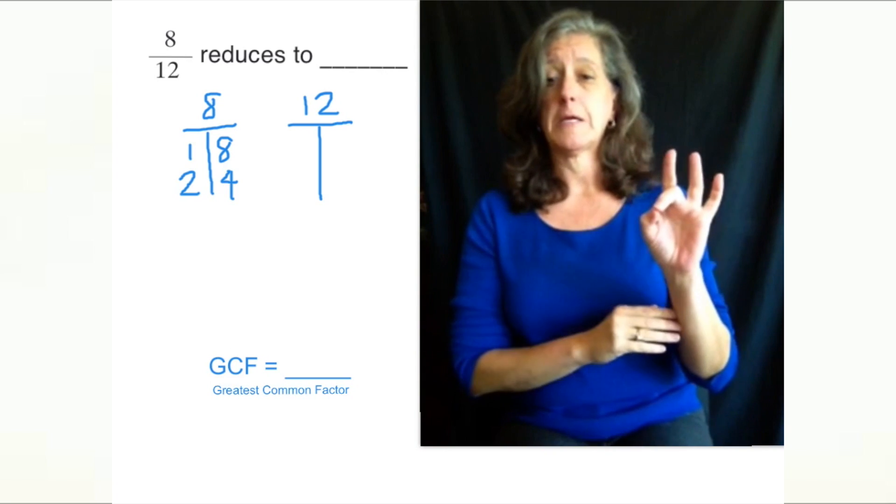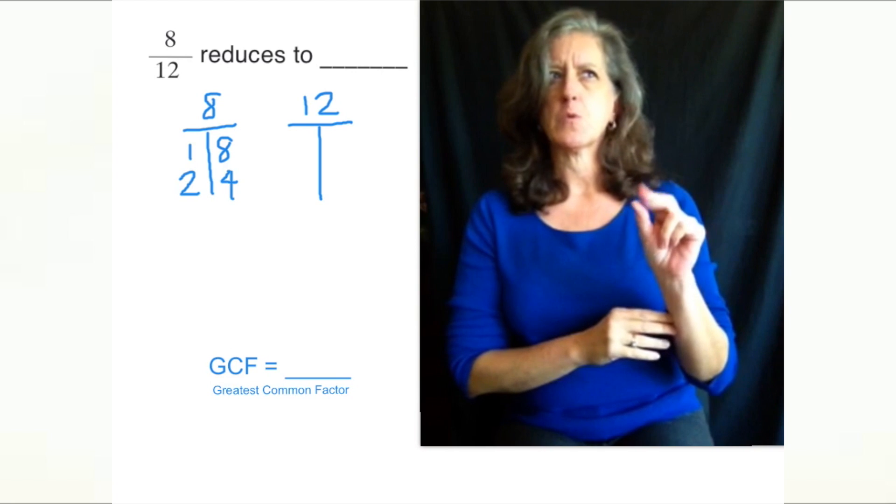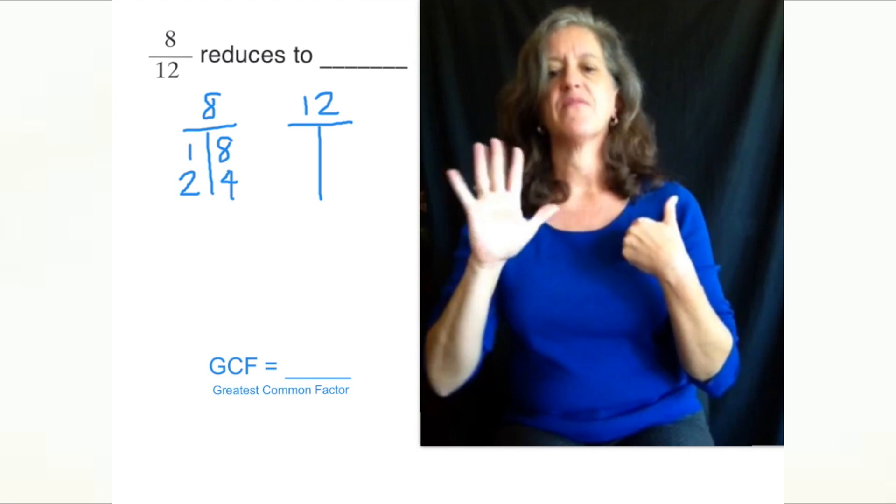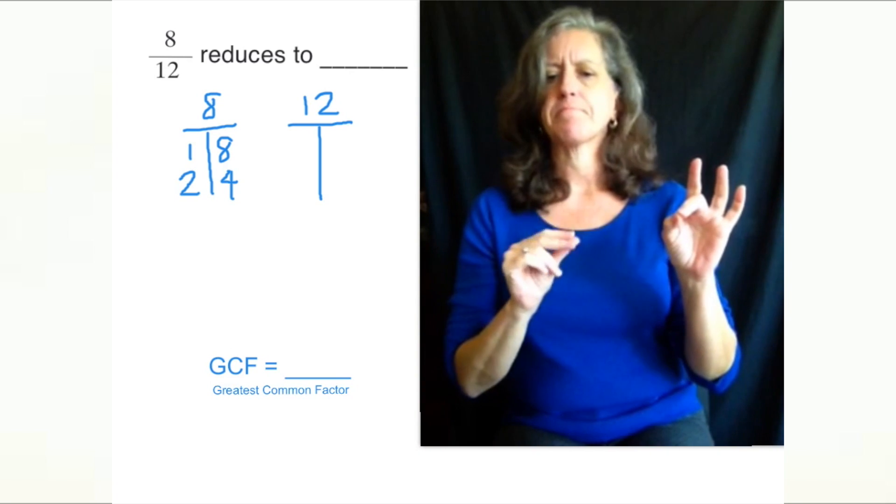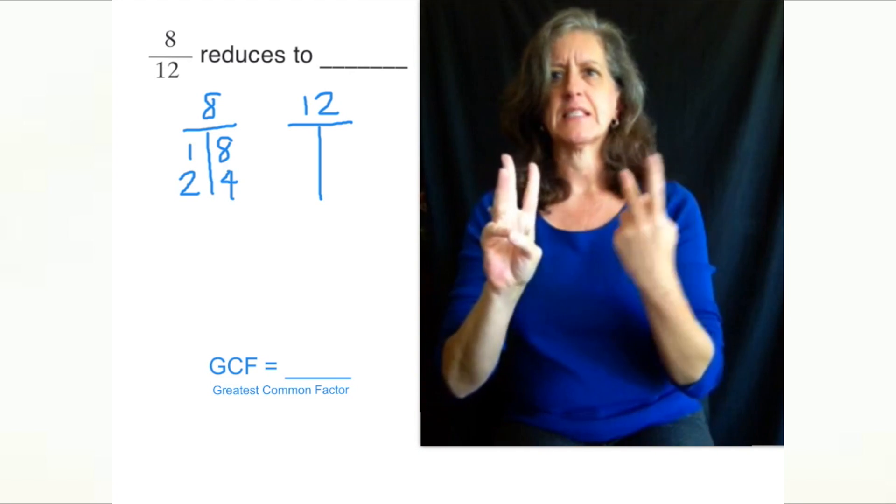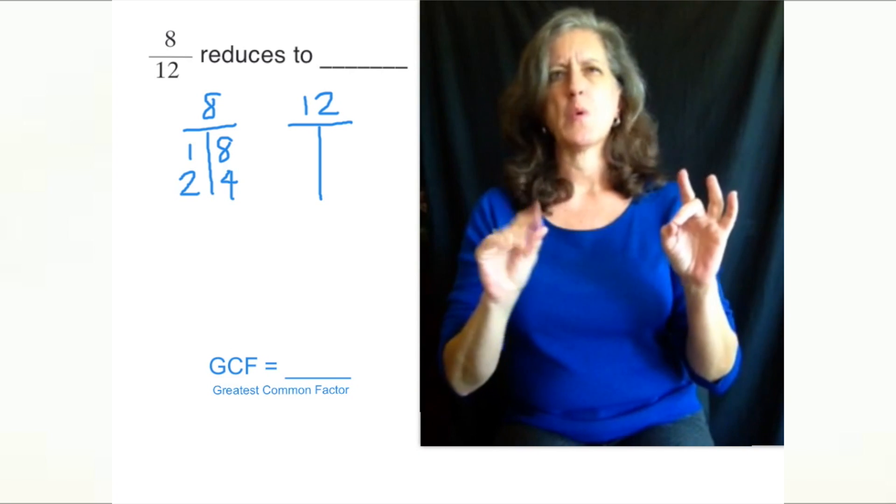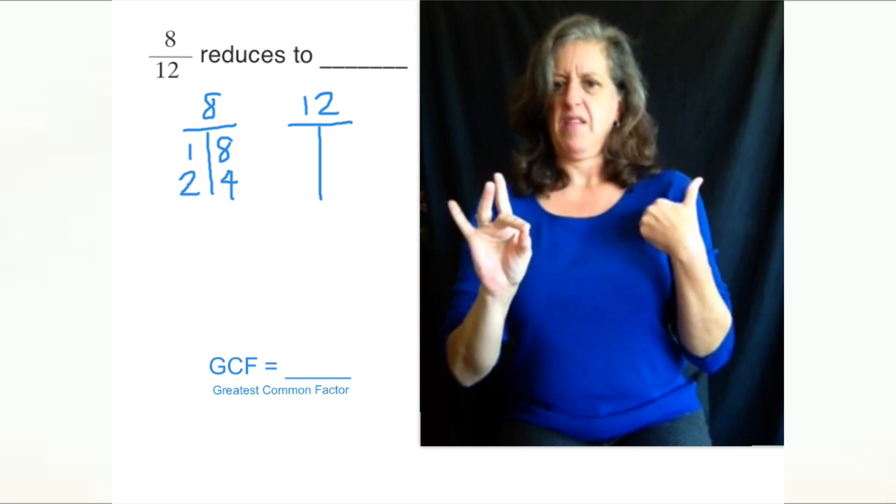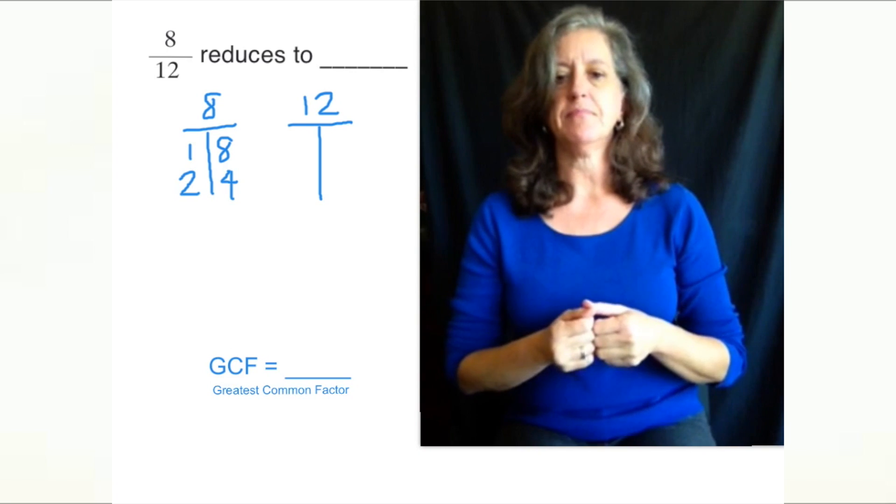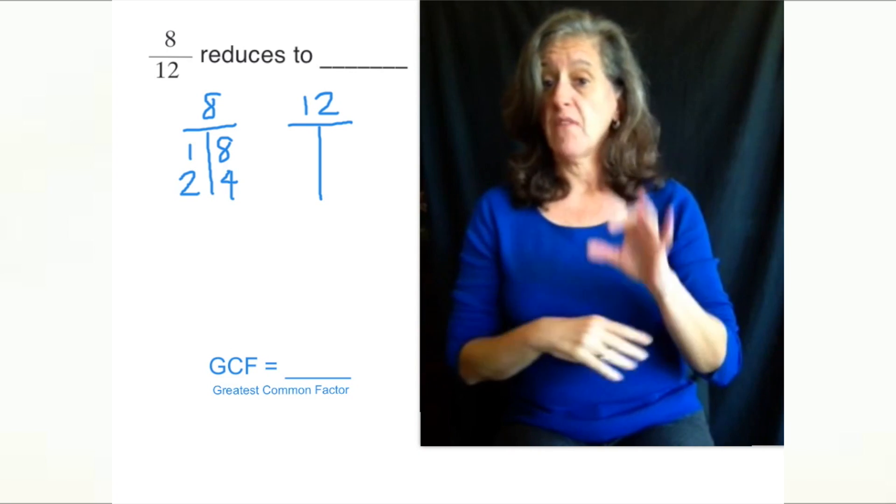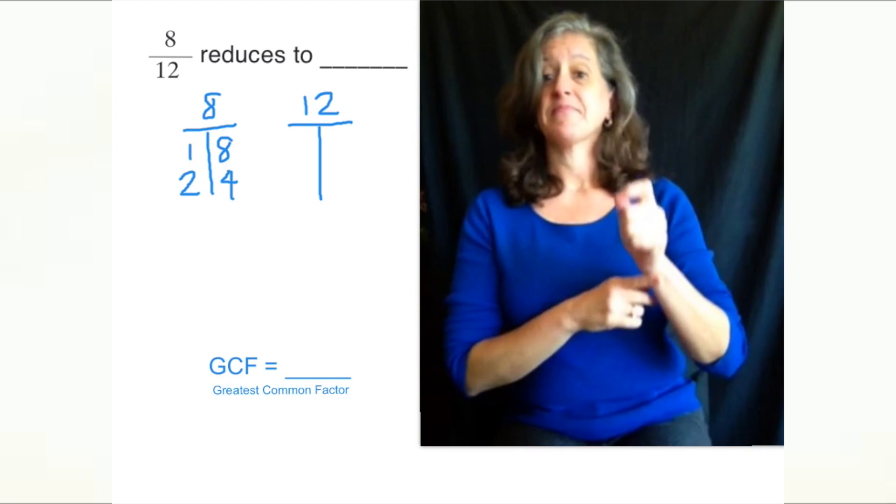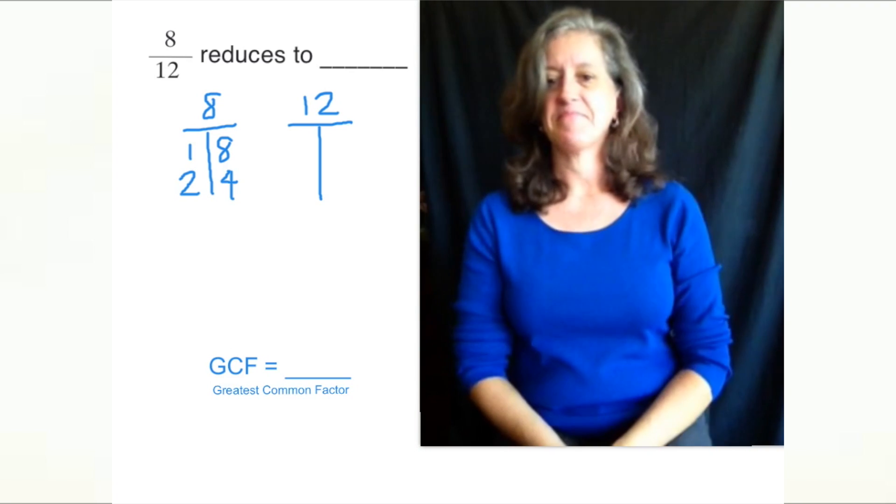Then 3 times something equals 8? No. Four? We already have 4. What about 5, 6, 7? No. Eight we already have, so we're done. So the factors of 8 are 1, 2, 4, and 8.